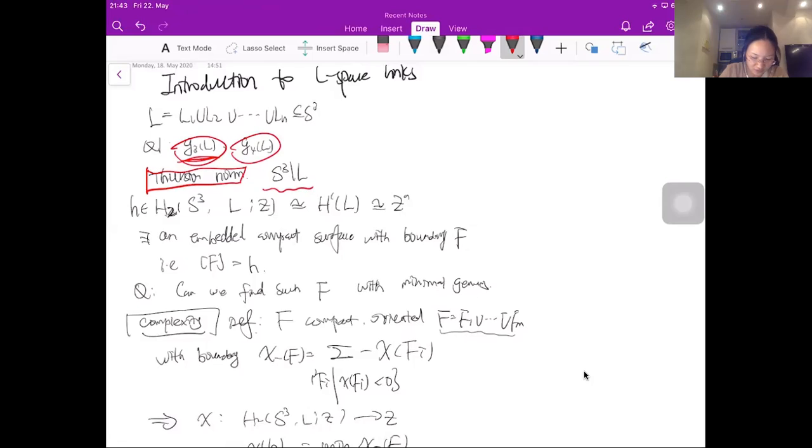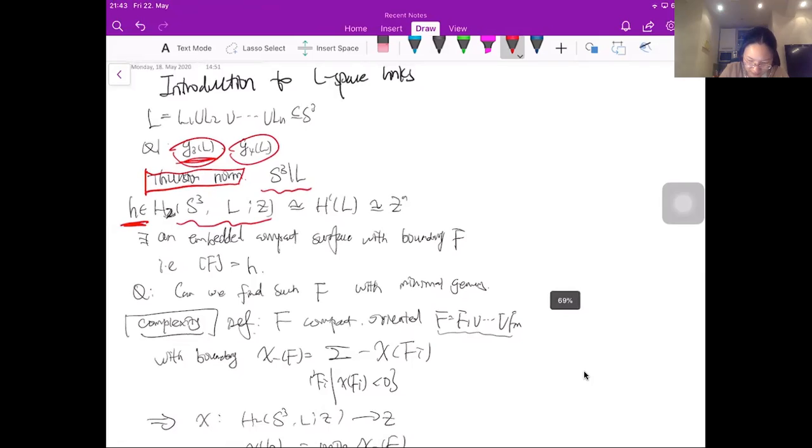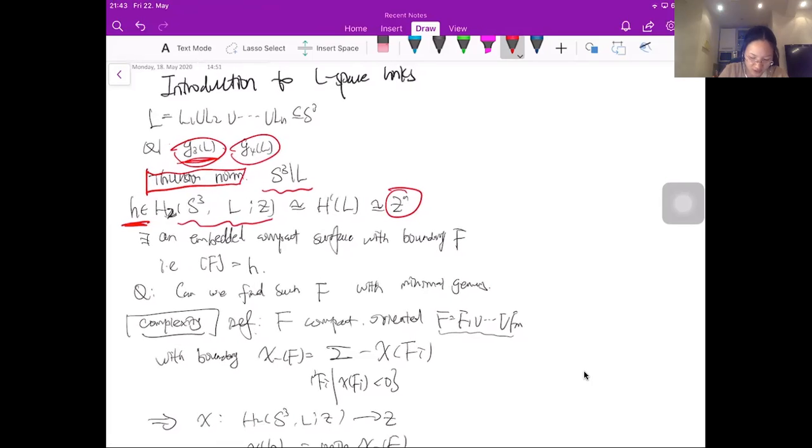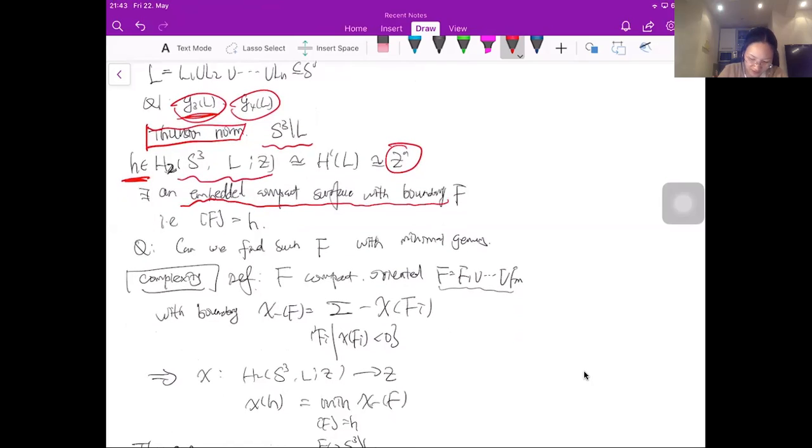And the Thurston norm is a norm defined in the link complement S³ minus L. And in order to consider this Thurston norm, we need to give a second relative homology class H inside this relative homology. And you can use some duality to identify the second relative homology to Z^N, and N is the number of components of the link. So for any such homology class H, you can find an embedded compacted surface with boundary F such that F represents this homology class H. So among all the surfaces F, we can ask what is the minimal genus one.